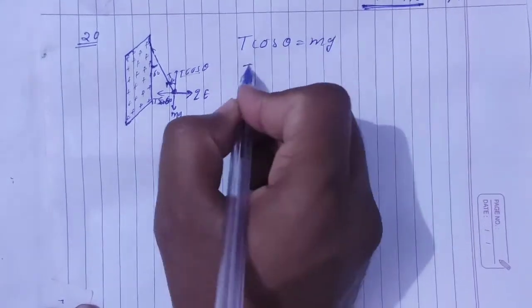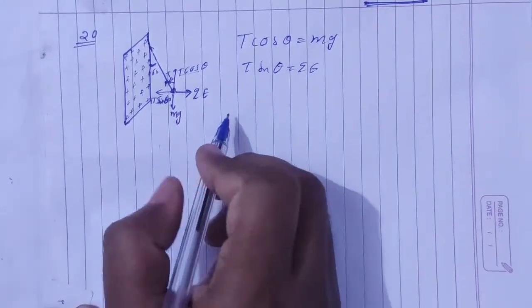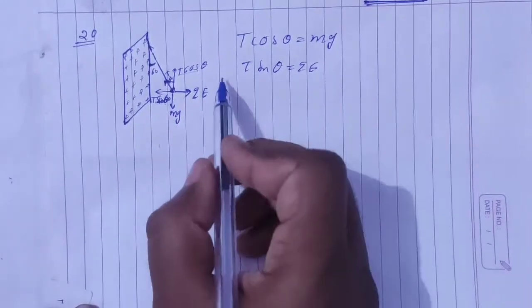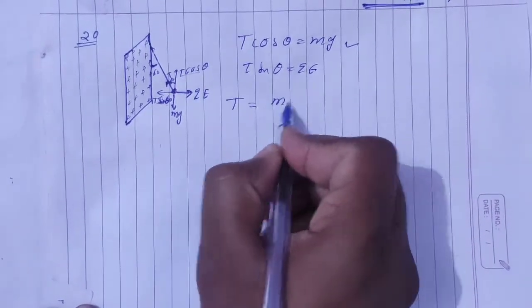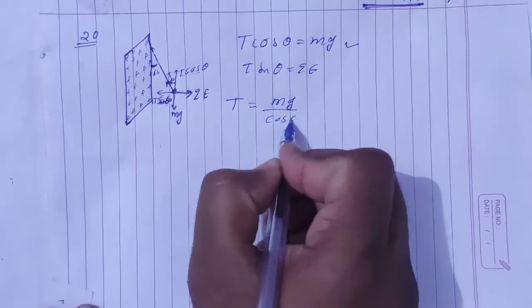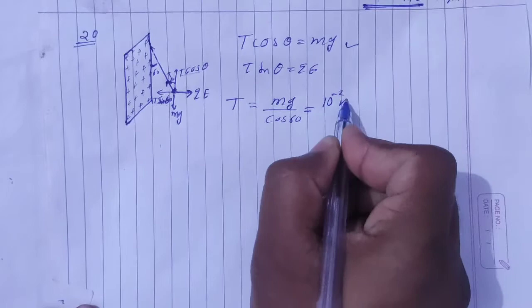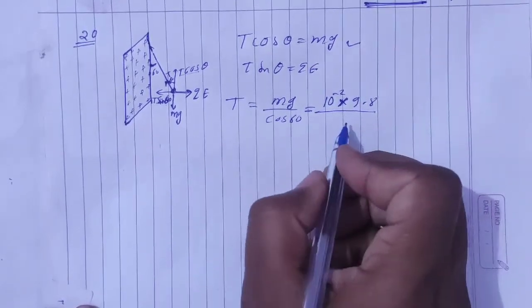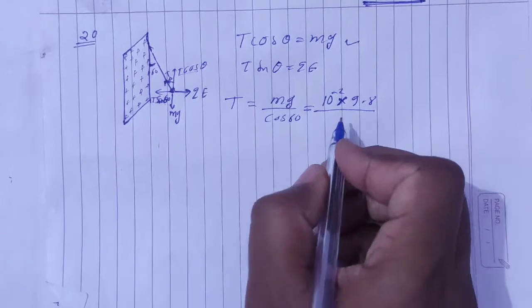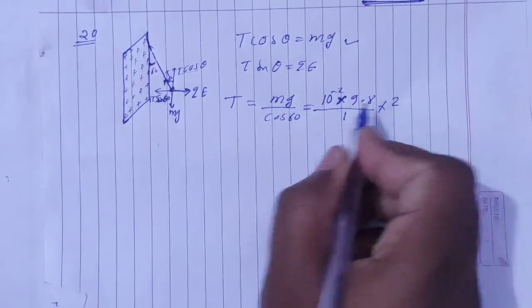So T cos theta equals MG and T sin theta equals QE. From this, T equals MG by cos theta equals QE by sin theta. This gives us tan theta equals QE by MG.